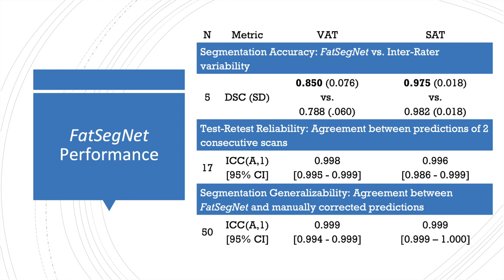FACSEG-NET's dice score outperformed manual raters on visceral adipose tissue and produced comparable results on subcutaneous. The pipeline has excellent agreement for both test-retest reliability and segmentation generalizability.